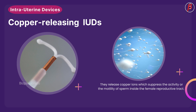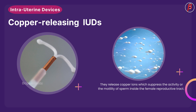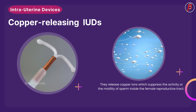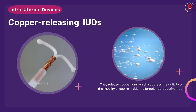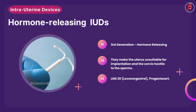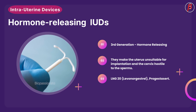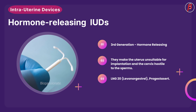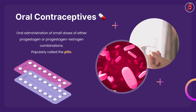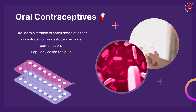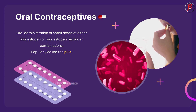Copper-releasing IUDs suppress the activity and motility of sperm inside the female reproductive tract. Hormone-releasing IUDs are third-generation IUDs; they make the uterus unsuitable for implantation and the cervix hostile to sperms. LNG-20 and Progestasert are some examples.